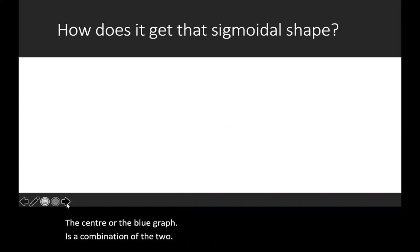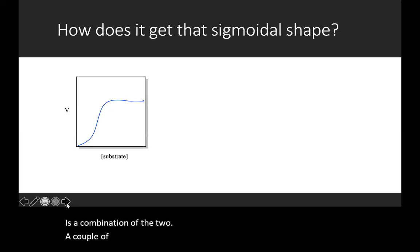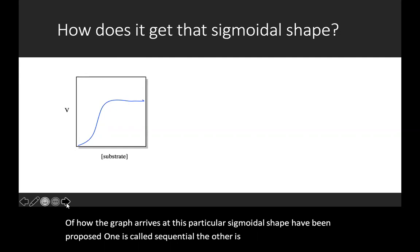A couple of different models of how the graph arrives at this particular sigmoidal shape have been proposed. One is called sequential, the other is called concerted. They're very similar.